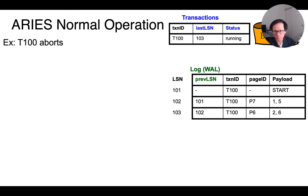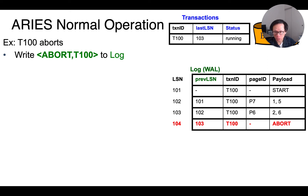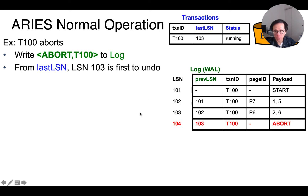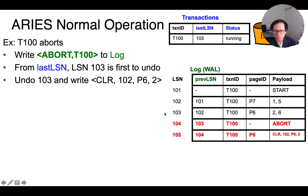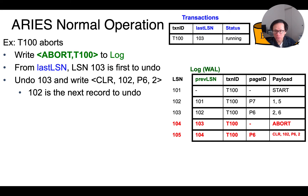Let's see how this works with an example. Suppose transaction 100 decides to abort. We'll first write the abort record to the log. Then, from the last LSN stored in the transactions table, we notice that the first action we need to undo has log record number 103. So we undo that action and write a compensation log record to the log. The compensation record states that we are reverting back a value to 2 on page number 6. And the next action to undo has LSN 102. We know it is 102 because we follow from the previous LSN field in the log entry, and that's what it says for log record number 103.